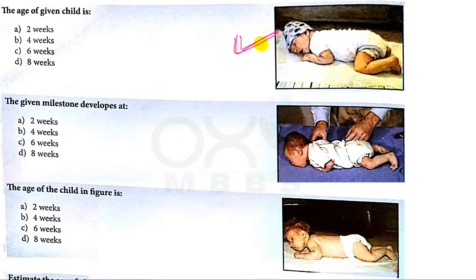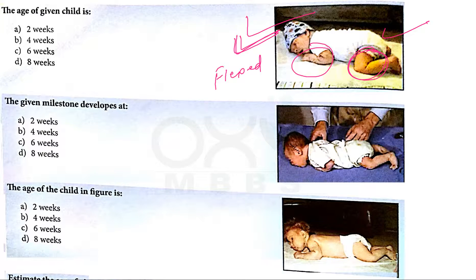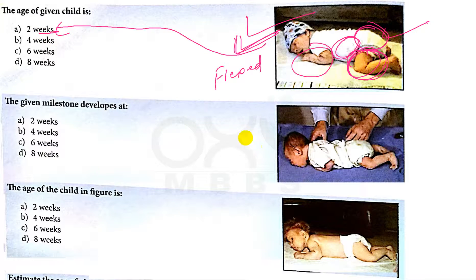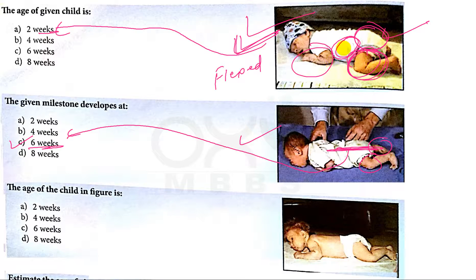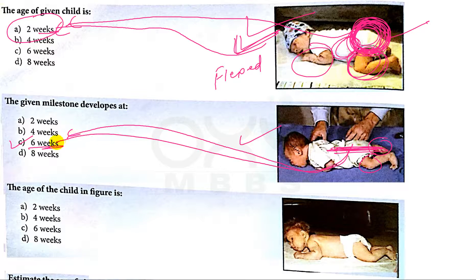Now this is the position of the baby in the prone position. If the whole body is in a flexed position — the knees are under the abdomen because the pelvis is lifted slightly — this is the position of the baby at around two weeks of age. Now in this picture, the pelvis is flat and the knees are slightly extended, and this is the position of the baby at around six weeks of age. So if the pelvis is slightly lifted, it is at around two weeks; if the pelvis is flat, it is at around six weeks.